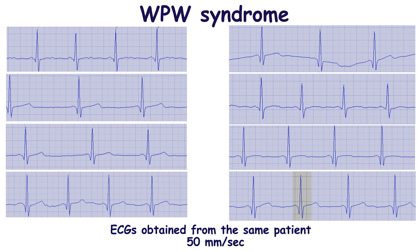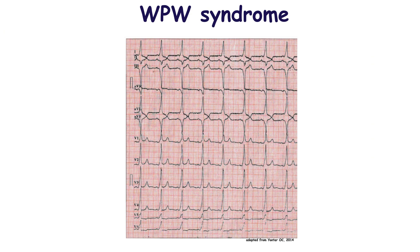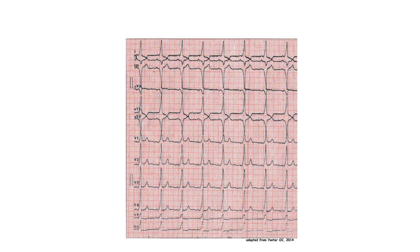Wolff-Parkinson-White syndrome may mimic a myocardial infarction pattern. The presence and location of Q-waves are determined by the direction of the delta wave. When the delta wave is oriented superiorly, it causes pathological Q-waves in the inferior leads due to a change in the direction of depolarization forces. If the delta wave is oriented to the right, Q-waves appear in lead I.